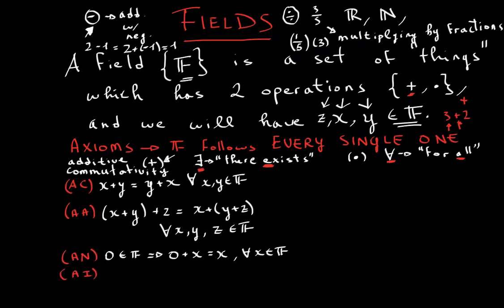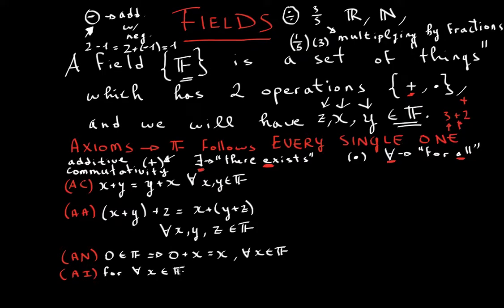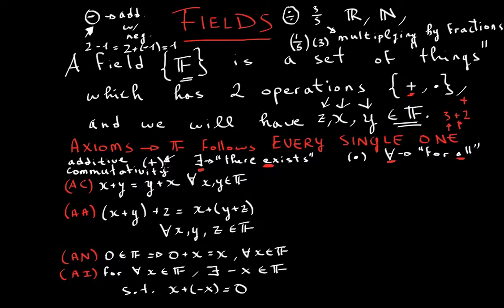Then we have an additive inverse — this is the method to get to the neutral element. For all x which are elements of the field, there exists a negative x in the field, such that if you add both of them — x plus negative x — you will get your neutral element, which is zero. That covers all the additive axioms.